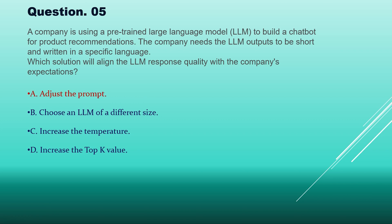The correct answer is option A, adjust the prompt. Option B is eliminated because the size of the LLM may not affect the size of the output. Option C, increasing the temperature, controls the creativity of the output — not the size — and increases randomness. Option D, increasing the top K value, controls the number of next possible tokens, not the output size. Adjusting the prompt is the only way to control the output size and language.